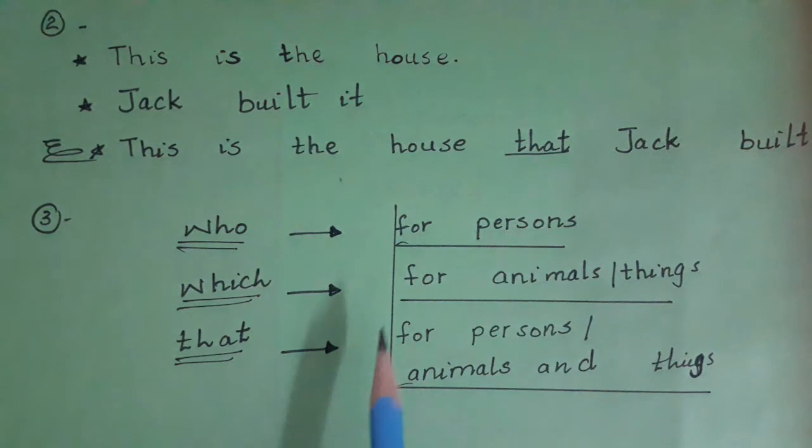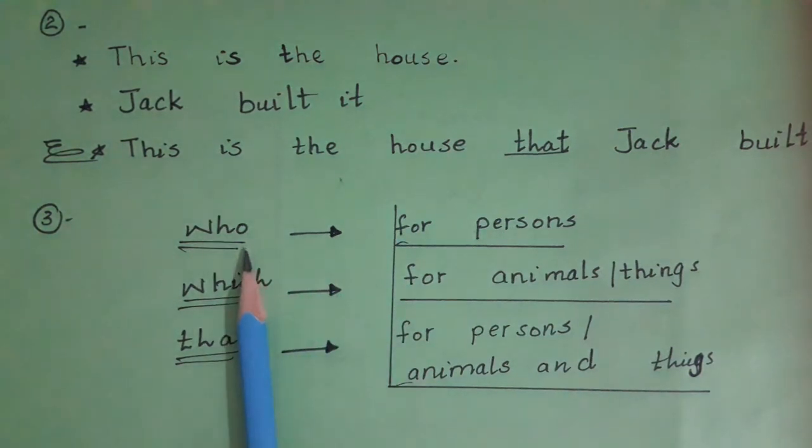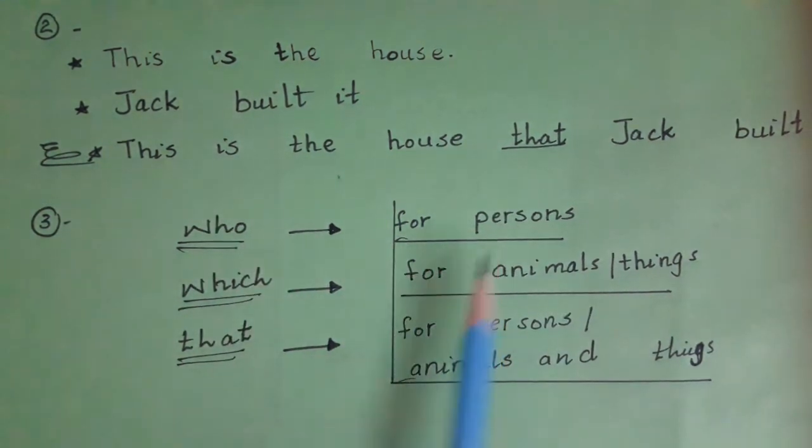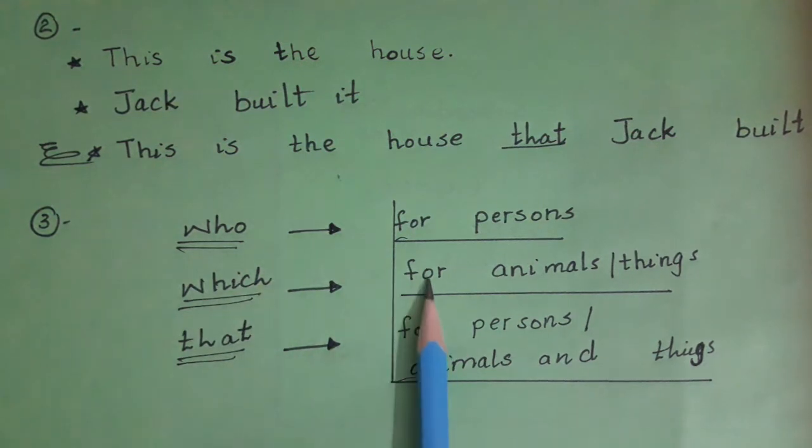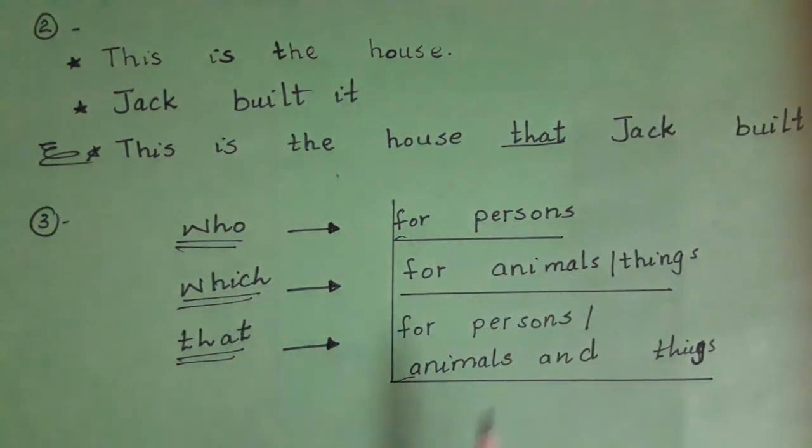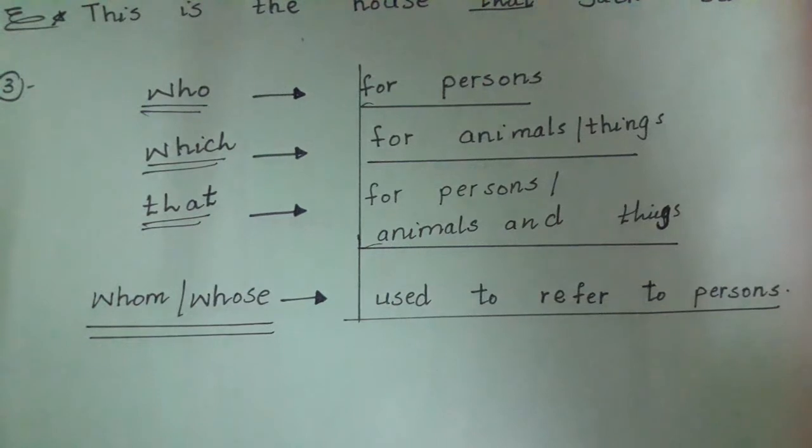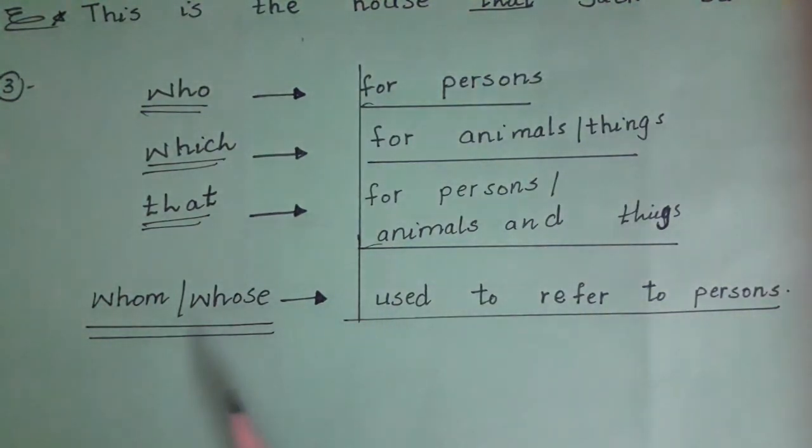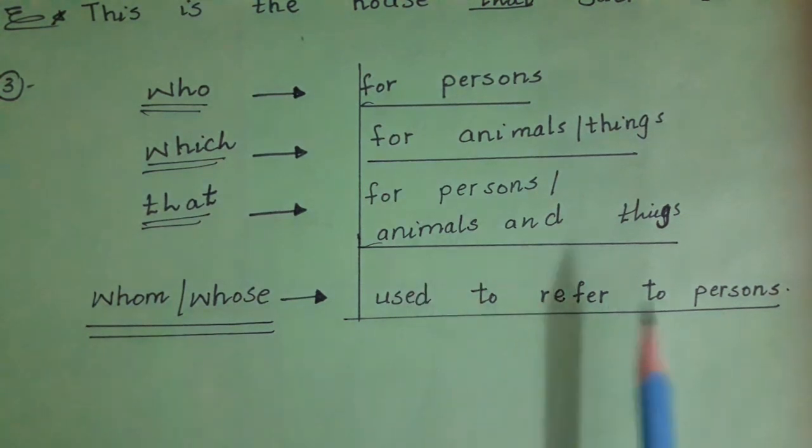Okay students, there are some other words like 'who'—who is used for persons; 'which'—which is used for animals and things; and 'that'—that is used for persons, animals, and things. And students, 'whom' and 'whose' are used to refer to persons.